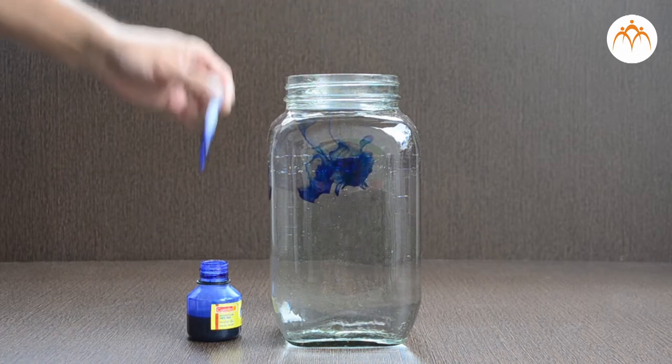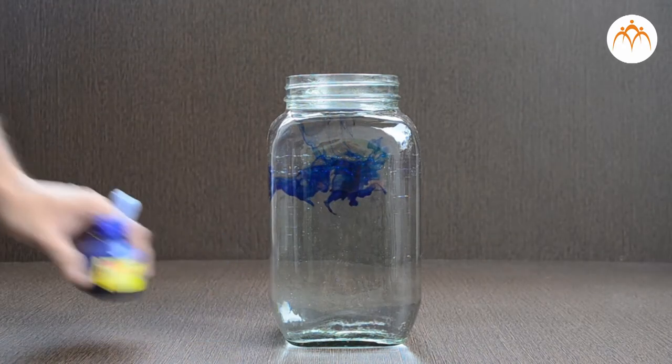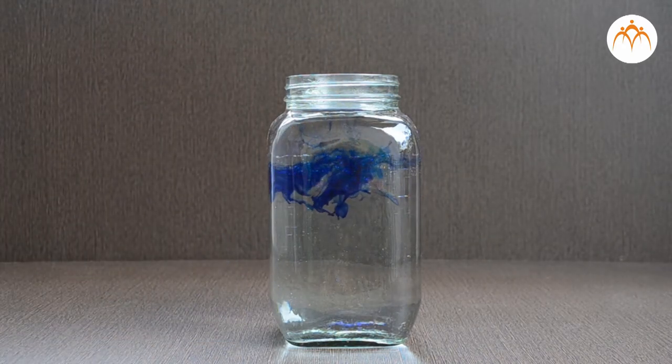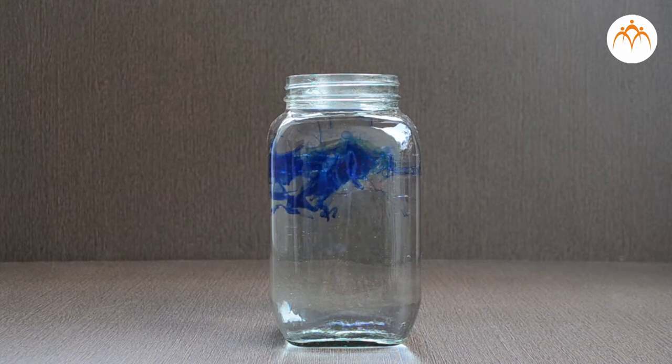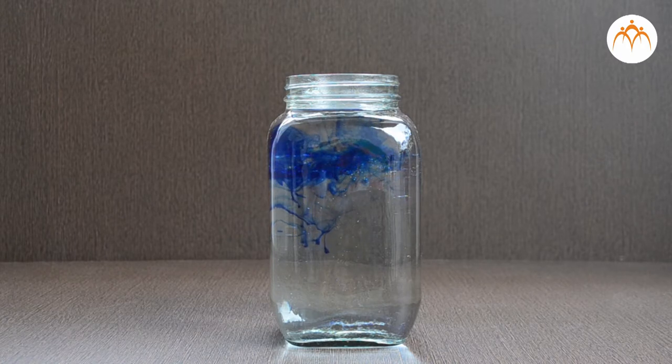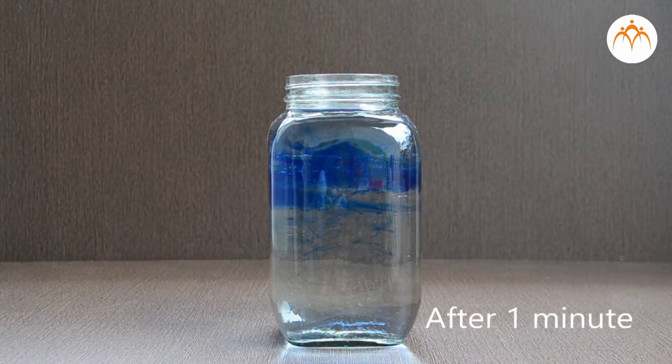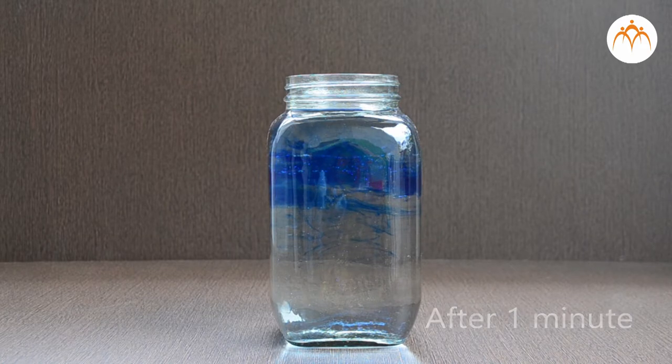Looks like ink is denser on the upper side. Why? Heated water is lighter. There is a layer of hot water formed over the cold one. Hence, most of the ink is dissolved in the upper layer of the water. Now, we can say that hot water is lighter than the cold water.